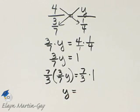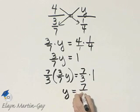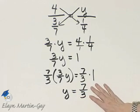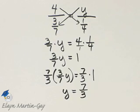The right side, 7 3rds times 1 is 7 3rds. The solution is 7 3rds, that means if Y is 7 3rds, a true proportion results.